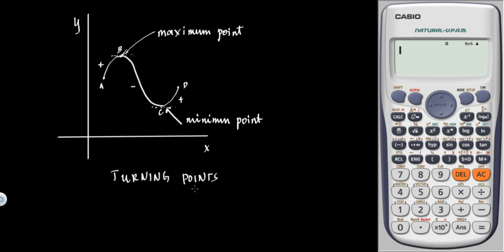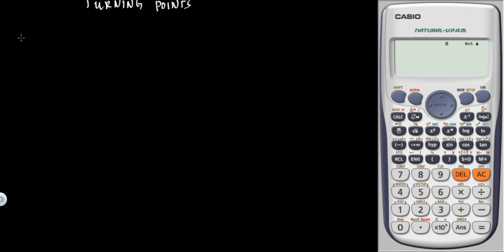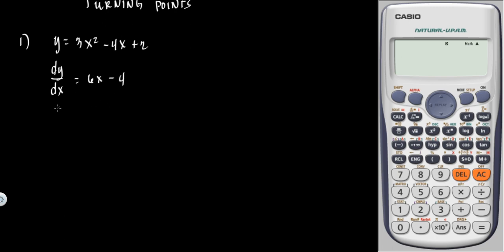Such points are called turning points — because the gradient goes from positive to negative, then negative to positive. Example number one: y = 3x² - 4x + 2. Find the turning points and determine the nature of each point. The first step is to differentiate with respect to x, giving dy/dx = 6x - 4. The next step is to set dy/dx equal to zero to find the turning point.